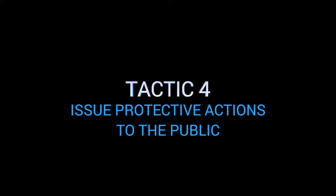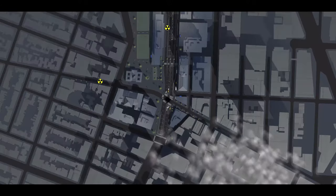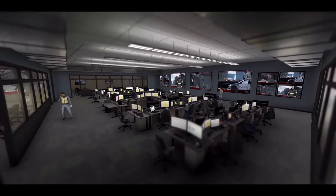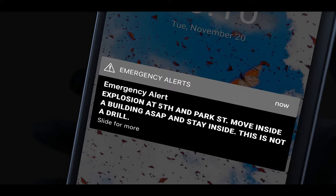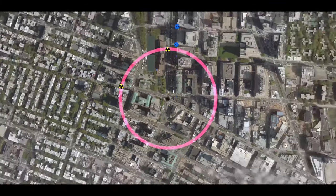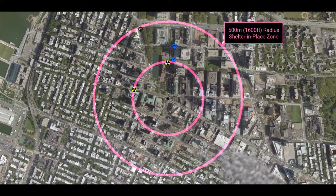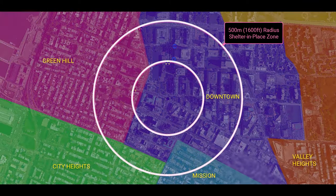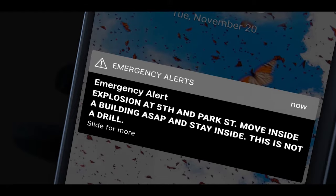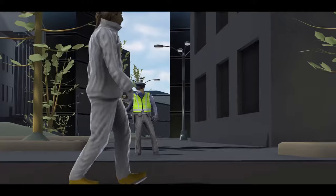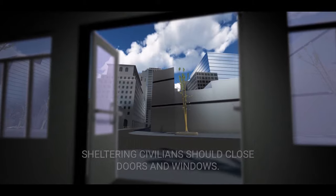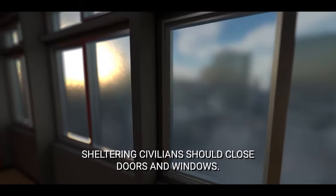Tactic 4: Issue protective actions to the public. When radiation is confirmed at the scene, emergency management should issue pre-approved public messaging with immediate shelter-in-place instructions for the affected areas. The initial shelter-in-place area for public safety should be 500 meters, or 1,600 feet, in all directions from the detonation point. In some instances, asking whole neighborhoods to shelter-in-place simplifies messaging. Use all media available to disseminate the message as quickly as possible without waiting to schedule a press conference. The overall intent is to have as many people as possible within the 500-meter radius shelter inside.